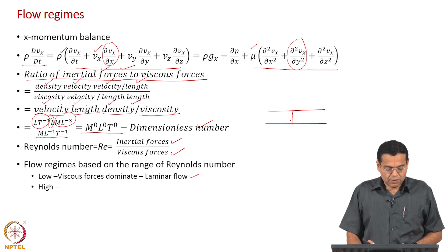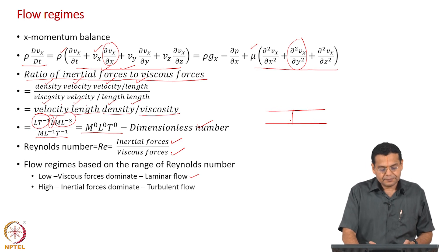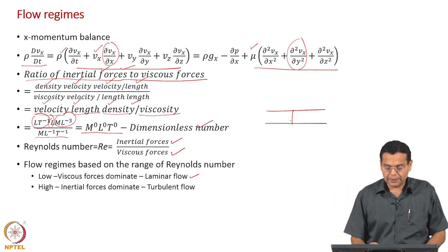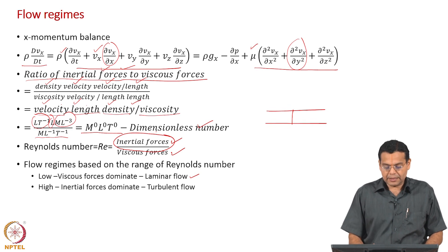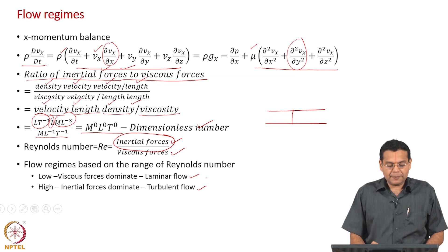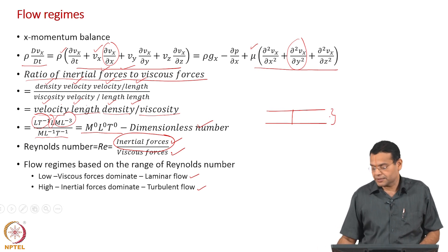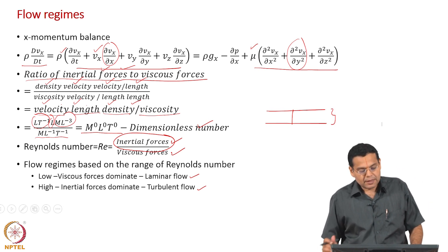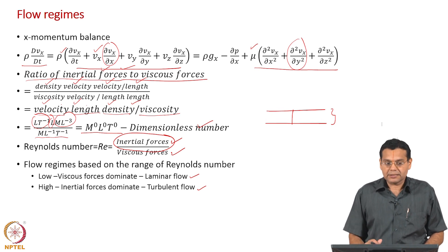At high Reynolds number, the inertial forces dominate and we call the flow turbulent. When can it happen? The velocity is high, the channel diameter is large, density is also high, and viscosity is low.